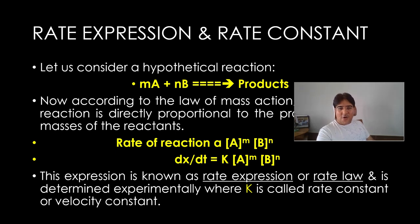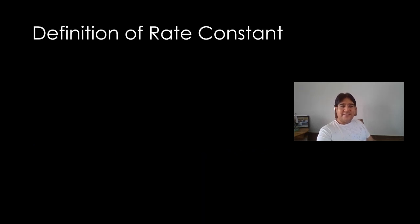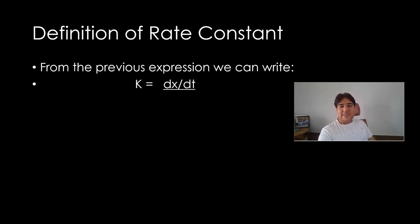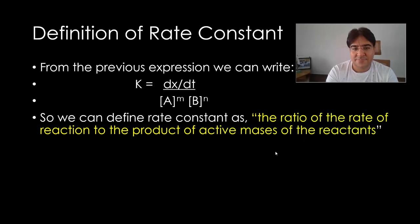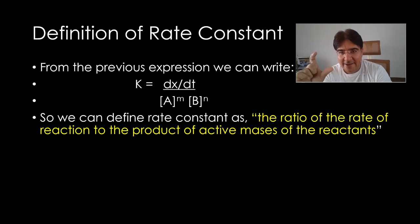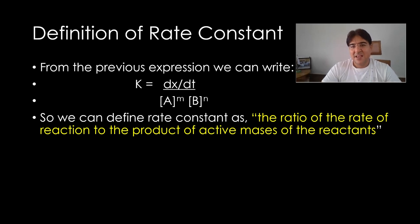So the A to the power m and B to the power n is hypothetical. In real life, these rate laws come through experiments. K is called the rate constant or velocity constant. Now what is rate constant? If you have dx/dt equal to K times A times B, then what is K? It will be the ratio of dx/dt and AB. So this is the ratio. Rate constant is basically a ratio of the rate of the reaction divided by the product of active masses of the reactants. The ratio of the rate of reaction to the product of active masses of the reactants is known as rate constant.